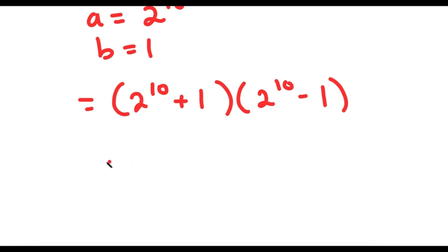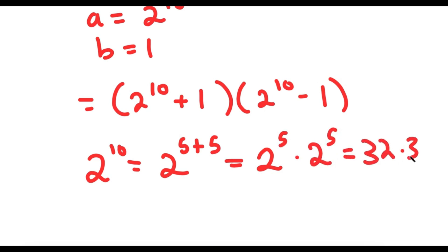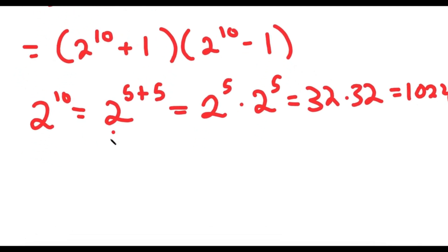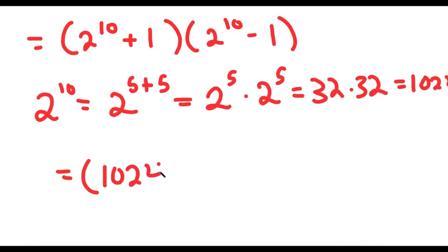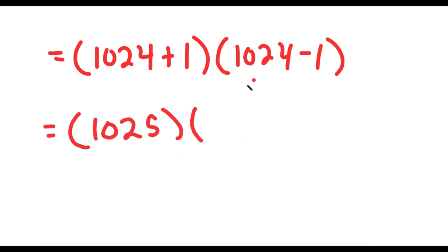Now, 2 to the power of 10 is equal to 2 to the power of 5 plus 5, which equals 2 to the power of 5 times 2 to the power of 5, which is 32 times 32, and 32 times 32 is 1,024. So I get 1,024 plus 1 times 1,024 minus 1.